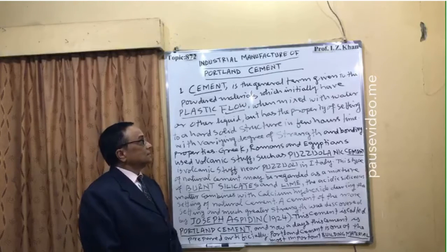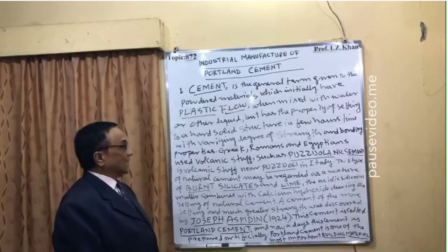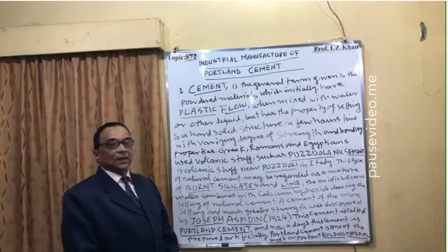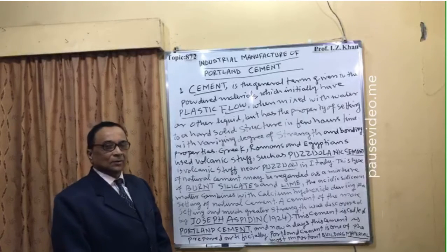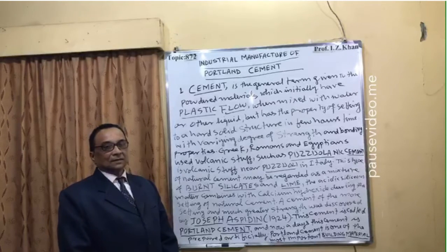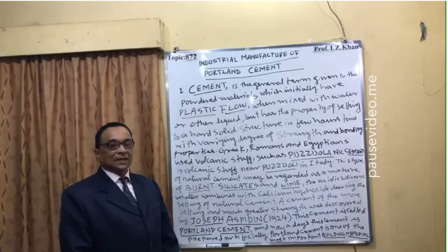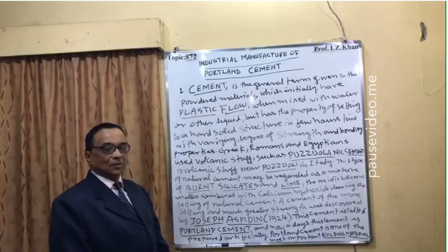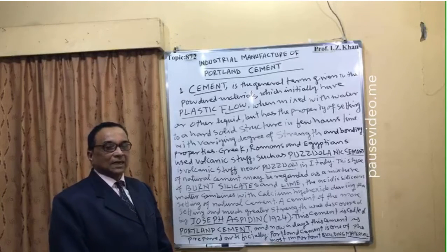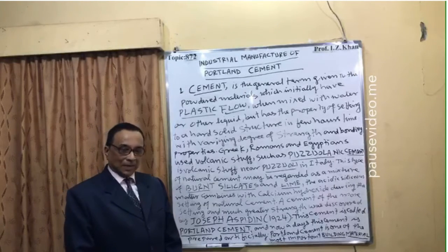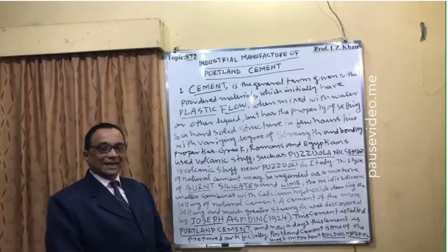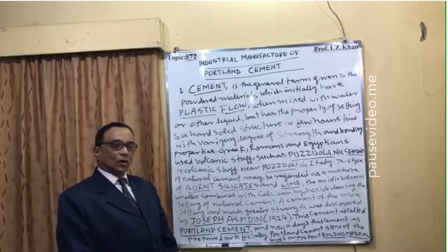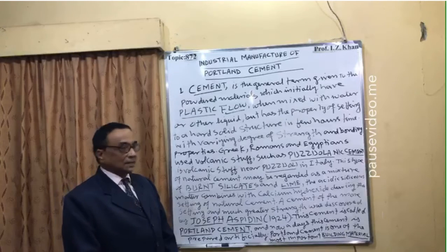Cement is the general term given to the powder mixture of chemical substances and compounds which have plastic flow. The word cement is given to such materials — they are a mixture of different chemical substances and compounds which have plastic flow once mixed with any liquid like water or any other solvent.